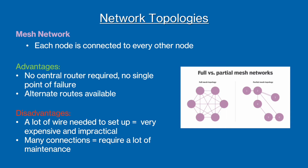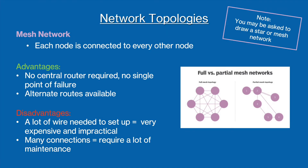Lastly, it's worth noting that mesh networks can be full mesh or partial mesh, as shown in the picture on the right. Full mesh is where every single node is connected to every other node, whereas in partial mesh, only some nodes — but not all of them — are connected to every single other node.